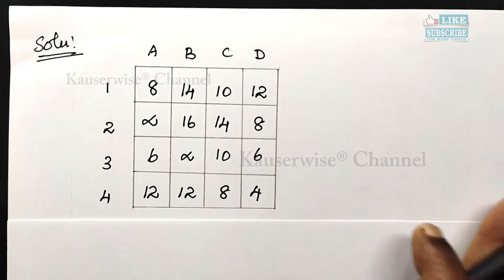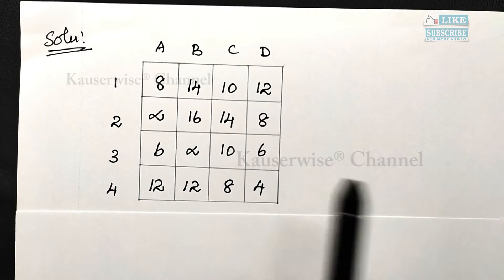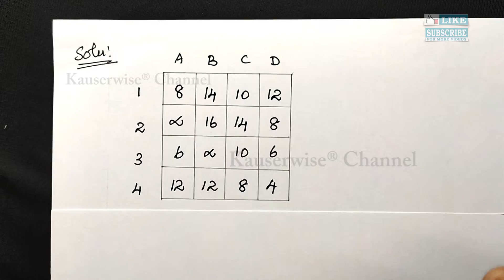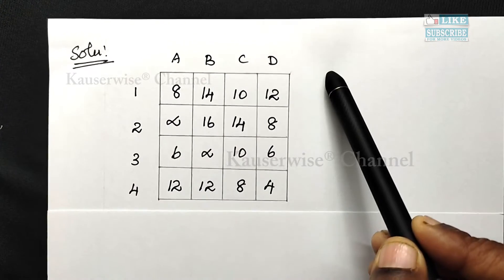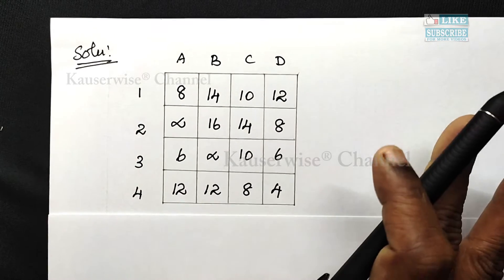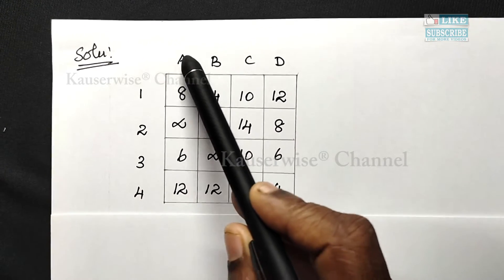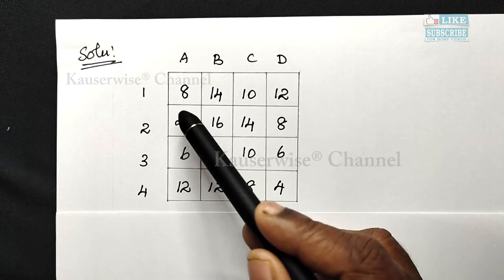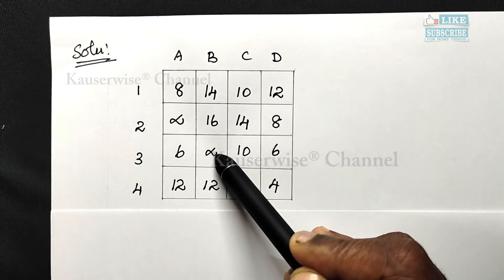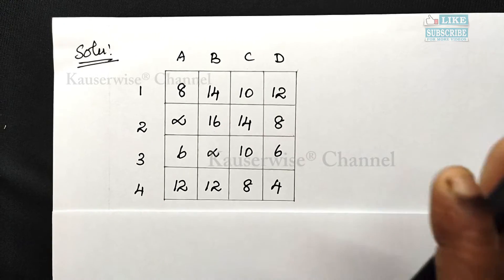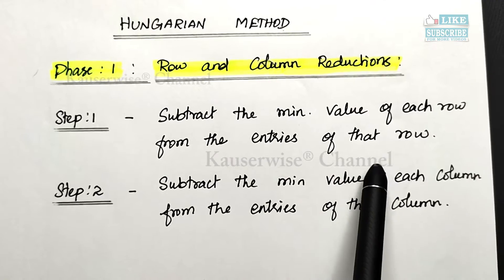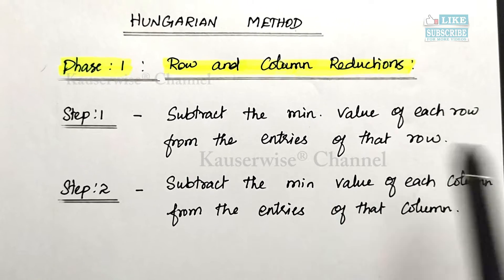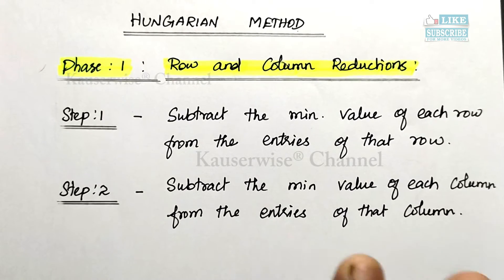First we need to check whether the problem is balanced or unbalanced. The matrix has 4 rows and 4 columns, so this is a balanced assignment problem. According to the restrictions, we are not supposed to assign Task A to Clerk 2 and Task B to Clerk 3. So we assign the highest value — infinity — in those restricted cells. Now you can proceed based on the algorithm, which we have already seen in detail in previous videos.